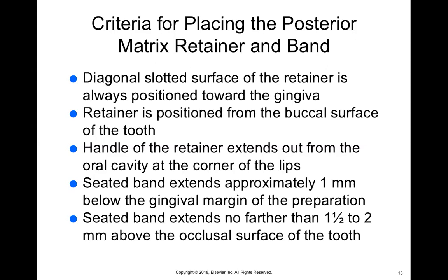For placement criteria on posterior teeth: the Toffelmeyer has a diagonal slot, and when placing the matrix band on the patient's tooth, that diagonal slot should always be facing towards the gingiva. The retainer itself should be on the buccal surface of the tooth, but the handle should be coming outside of the mouth — the handle should not be facing towards the patient's throat. Please go back to those videos to see exactly how that looks.